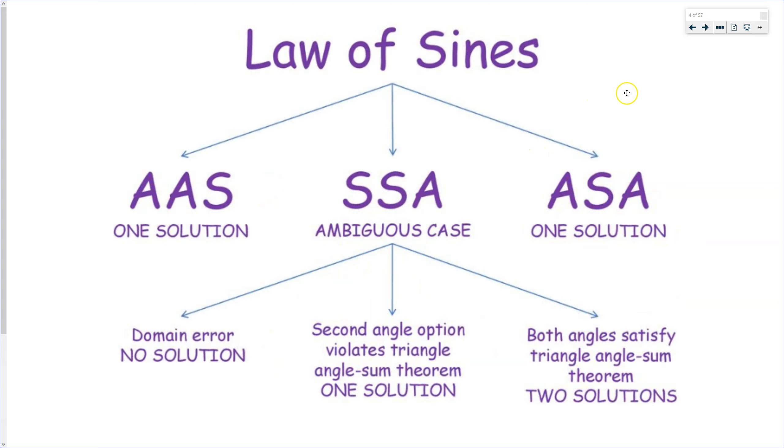So when we're working within the context of this little flowchart, the first thing I want you to do always, always, always is draw a picture and label everything with A's, B's, and C's. That way you'll be able to determine, do I have two consecutive angles and a side? Am I in side-side angle? Or am I in angle-side angle?